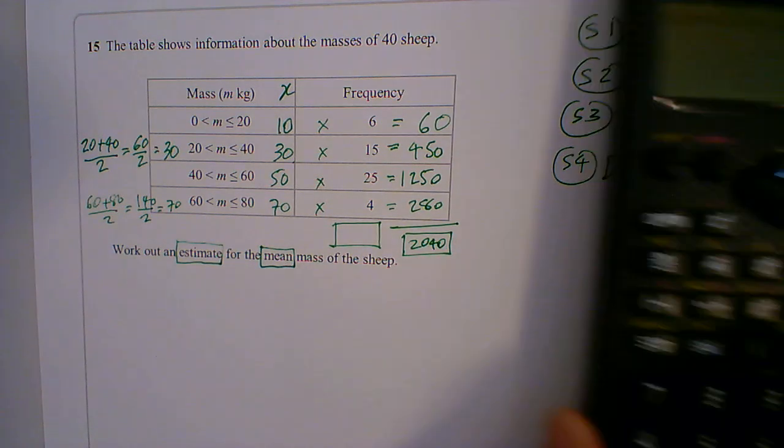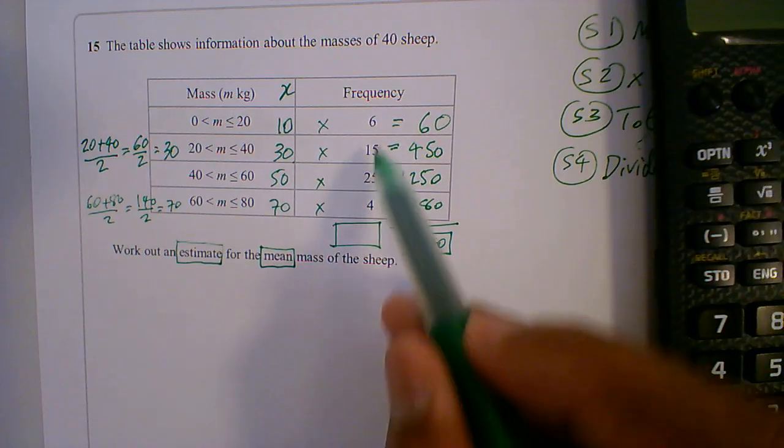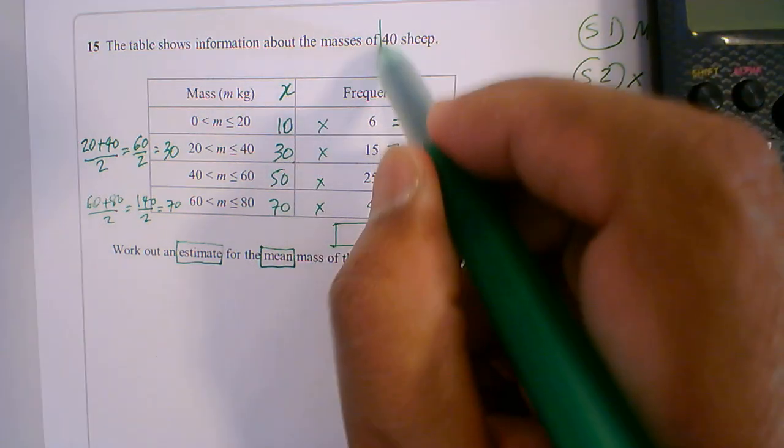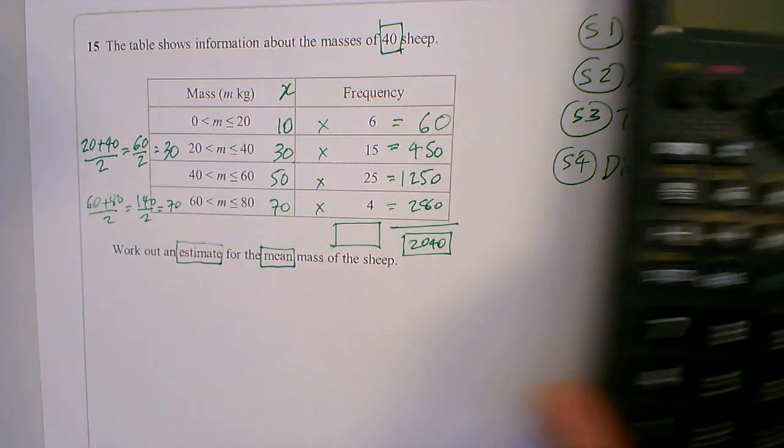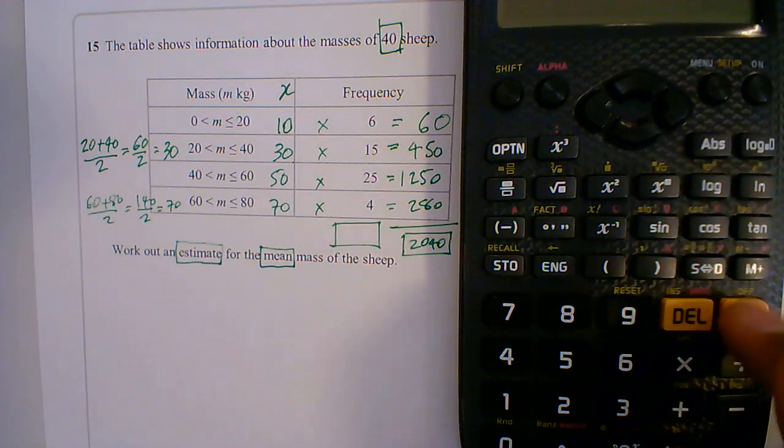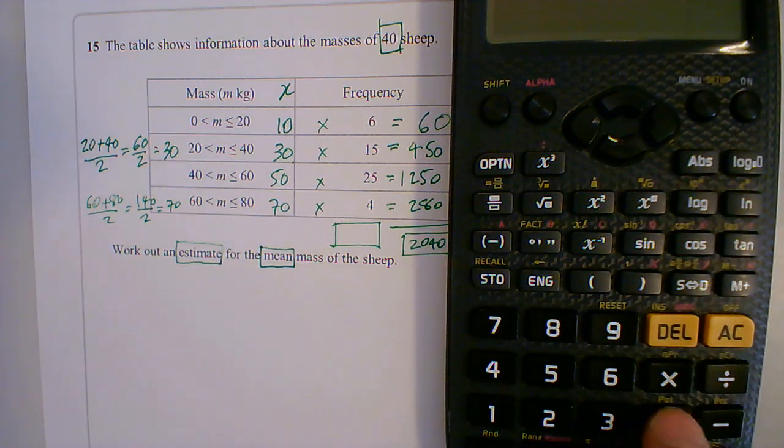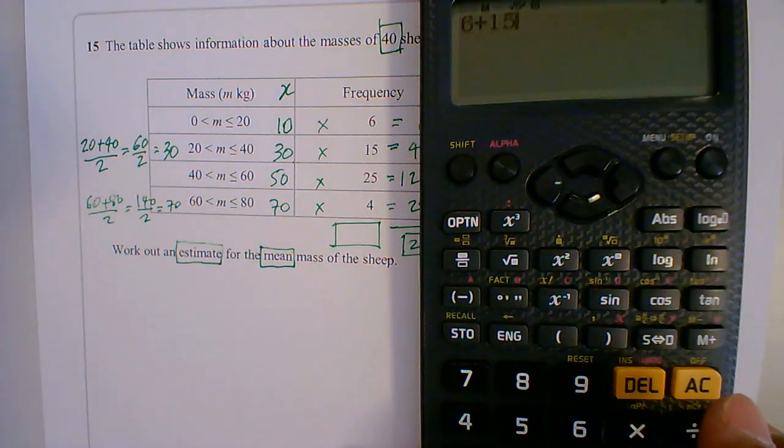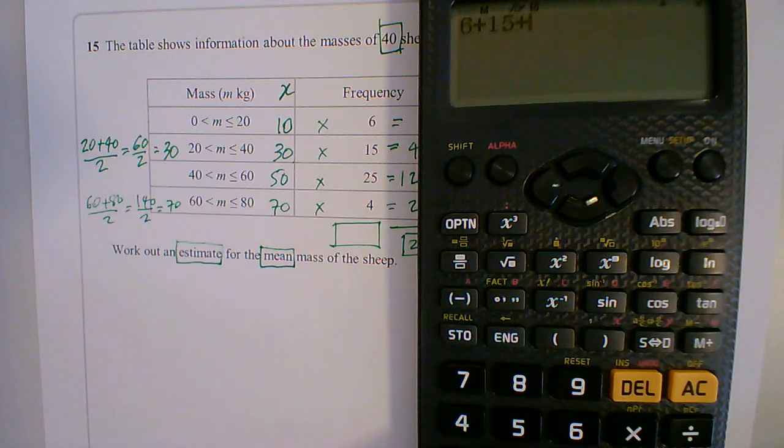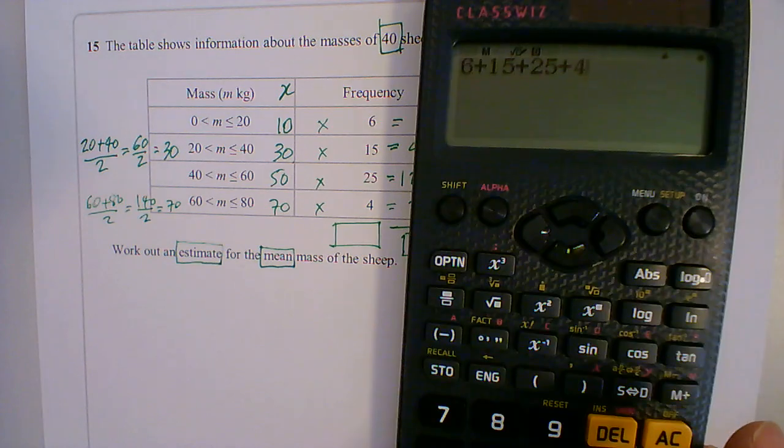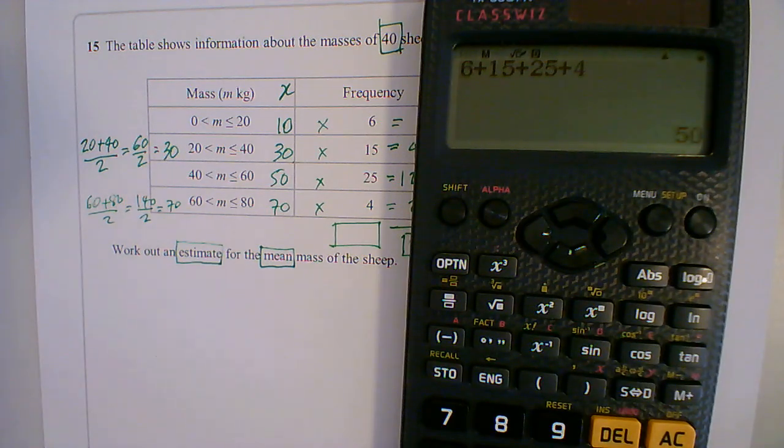And then I divide by all of this. Now this should match this, because I'm told there are 40 sheep. So when I add these together, I've got 6 plus 15 plus 25 plus 4, gives me 50.